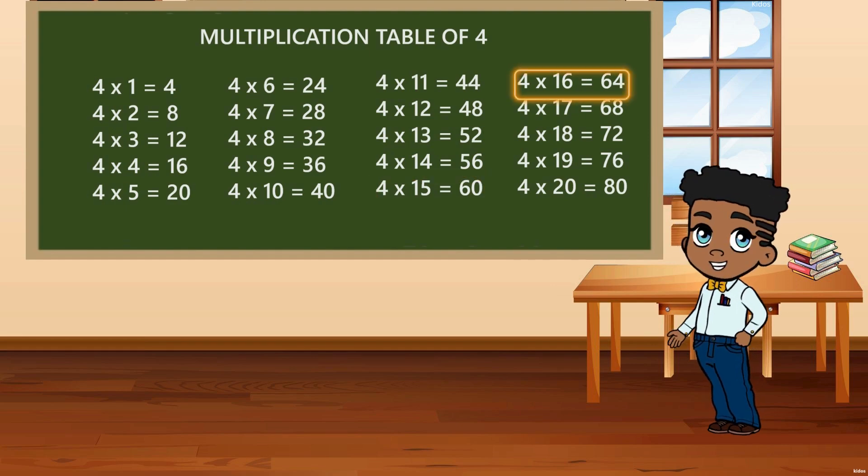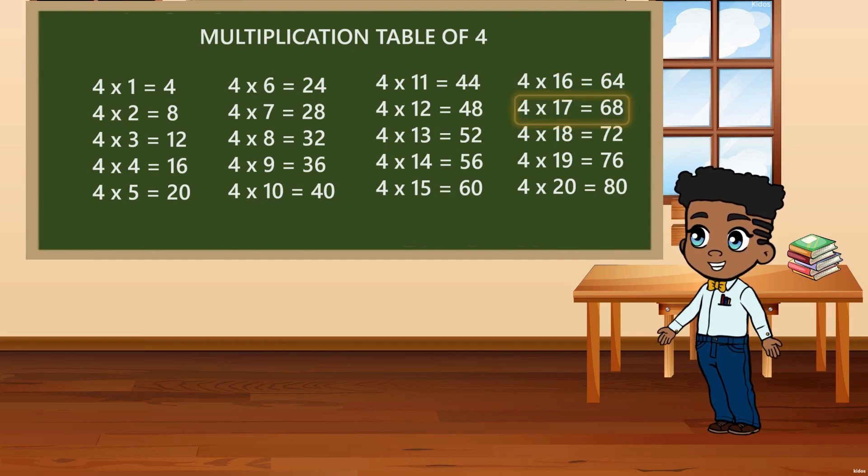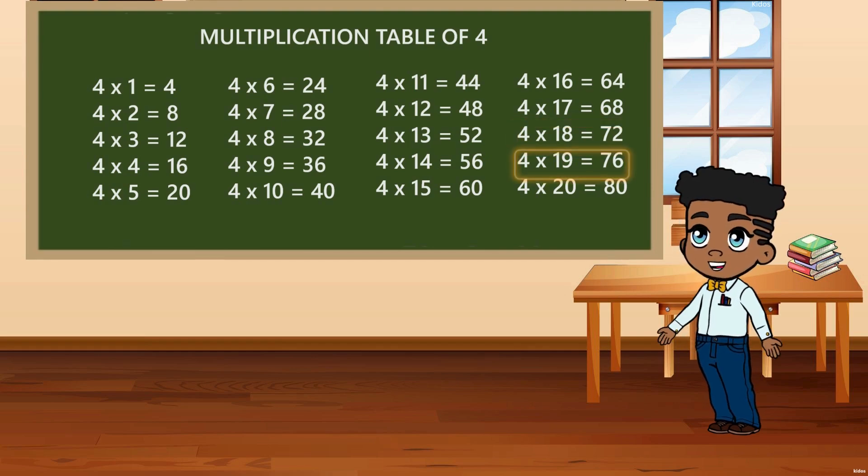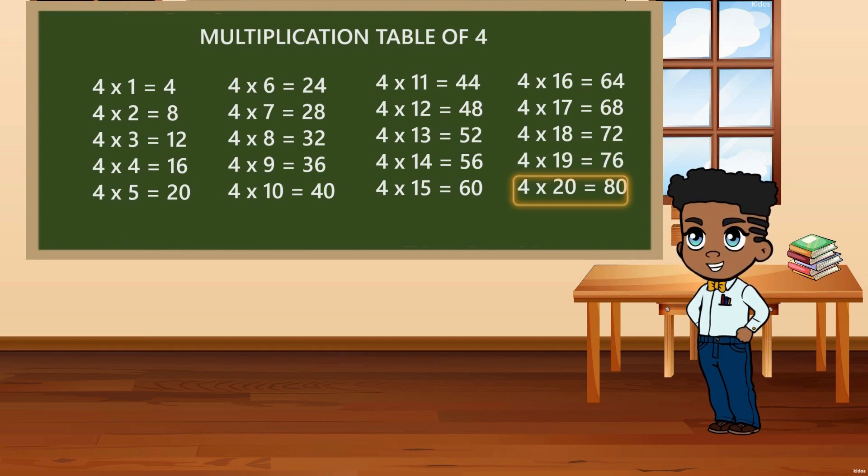4 16's are 64. 4 17's are 68. 4 18's are 72. 4 19's are 76. 4 20's are 80.